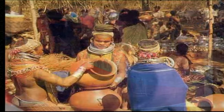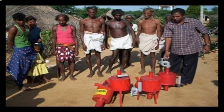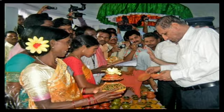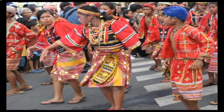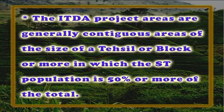Next are tribal regions. A detailed and comprehensive review of the tribal people's problems was taken up on the eve of the fifth five-year plan period. The main objective is socio-economic development of tribal communities through income-generating schemes allied with infrastructure development programs and protection of the tribal communities against exploitation. To achieve this, the Integrated Tribal Development Agency came into existence. The ITDA project areas are generally contiguous areas of the size of a tehsil or block or more in which the ST population is 50 percent or more of the total.